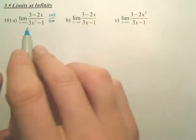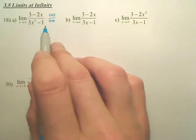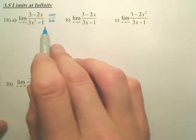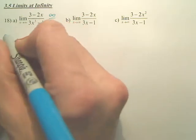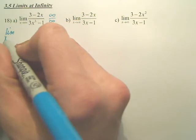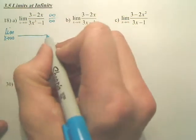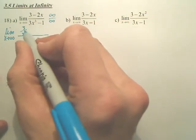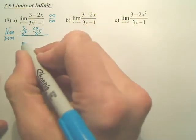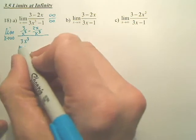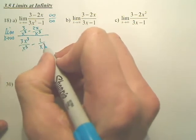So in order to find the limit as it approaches infinity, we divide each piece by the highest degree in the denominator. So the limit as x approaches infinity, you're going to have 3 over x cubed, minus 2x over x cubed, over 3x cubed over x cubed, over minus 1 over x cubed.